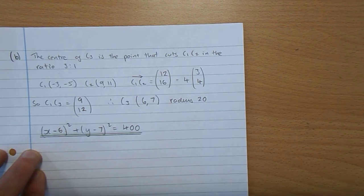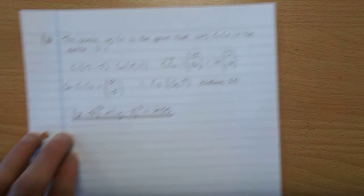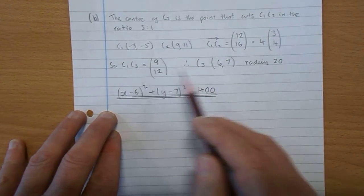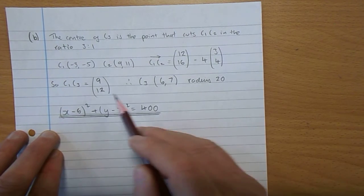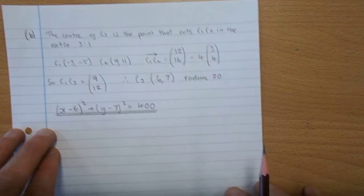So C1 to the midpoint of the middle of C3 is 3 lots of 3, 4, which is 9, 12.